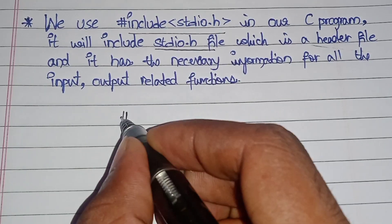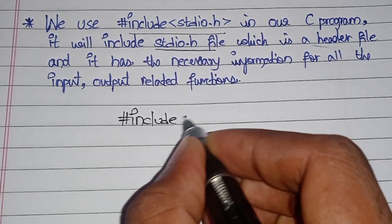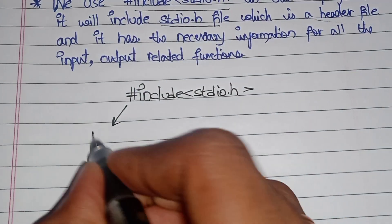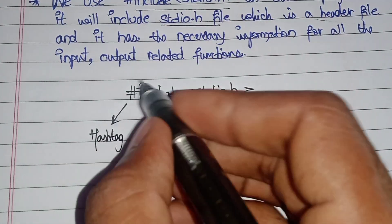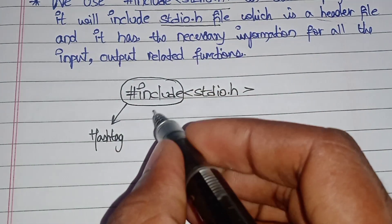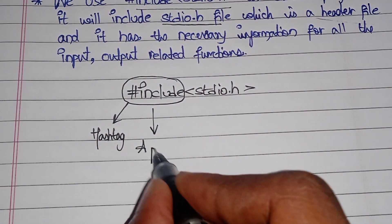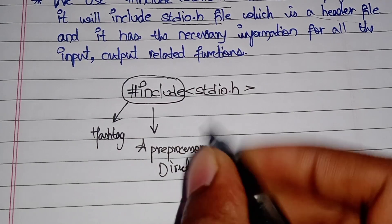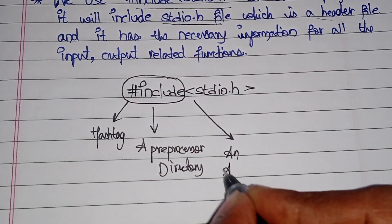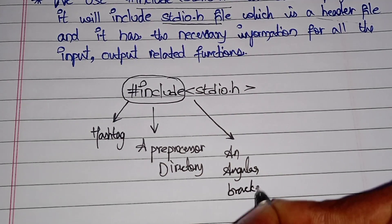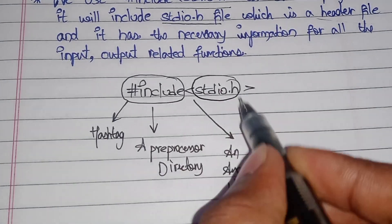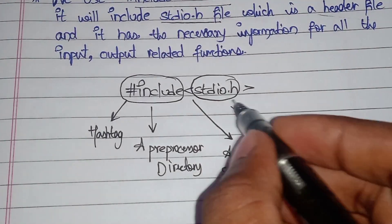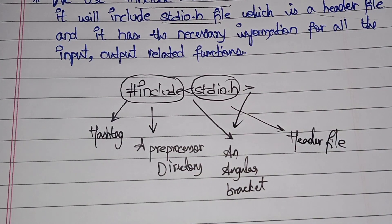Now let's look at what #include stdio.h contains. The hashtag symbol is a preprocessor directive. The angle brackets surrounding stdio.h are angular brackets, and stdio.h itself is the header file. That's all for today's lecture — thank you for watching, subscribe for more videos.